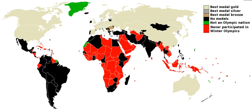After the 2018 Winter Olympics in PyeongChang, 71 of the current 206 National Olympic Committees have yet to win an Olympic medal. Seven historic National Olympic Committees and the Refugee Olympic Team are also included in this list.